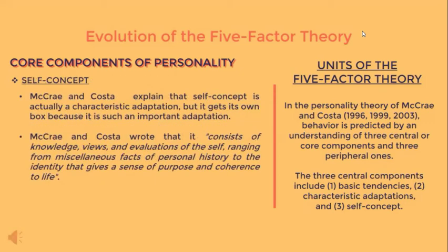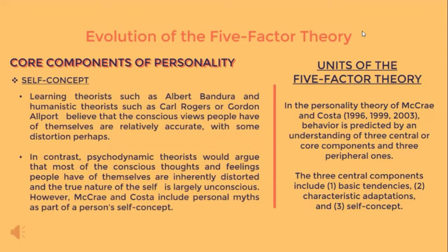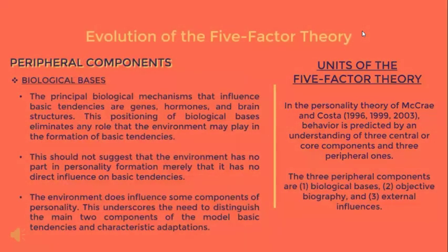The third core component is the self-concept. McCrae and Costa explained that the self-concept is actually a characteristic adaptation but gets its own box because it is such an important adaptation. It consists of knowledge, views, and evaluations of the self, ranging from miscellaneous facts of personal history to the identity that gives a sense of purpose and coherence to life. Learning theorists like Bandura and humanistic theorists like Rogers believe conscious views of the self are relatively accurate, while psychodynamic theorists argue most conscious self-thoughts are inherently distorted and the true self is largely unconscious.